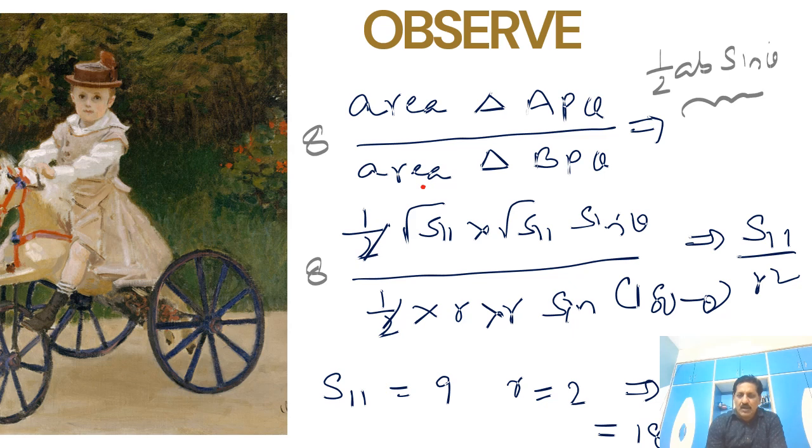So this angle is sin(180 - θ) because the sum of the opposite angles will be equal to 180. That means in the quadrilateral all the sum of four angles must be equal to 360. This is θ and this is sin(180 - θ). Sin θ, sin(180 - θ), these two get cancelled here. So directly it has become 8 times of s11 upon r².